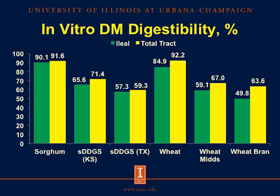For sorghum, wheat, and their co-products, we see the same trend: going from the grains down to their co-products, both ileal and total tract in vitro dry matter digestibilities decrease. And again, looking at ileal versus total tract within each ingredient, total tract digestibility is higher than ileal, with this increase varying widely among all ingredients.